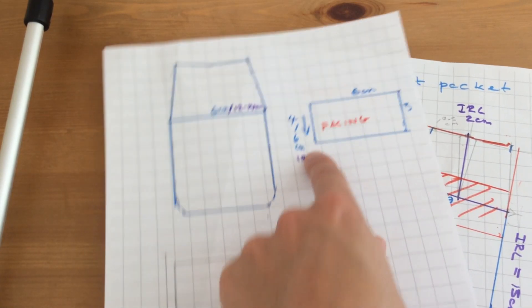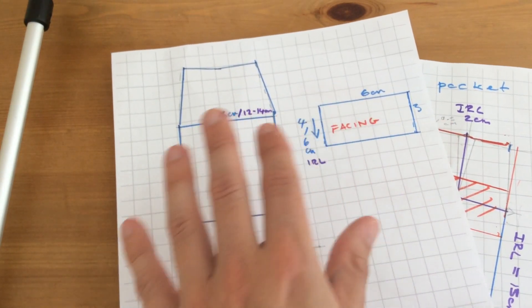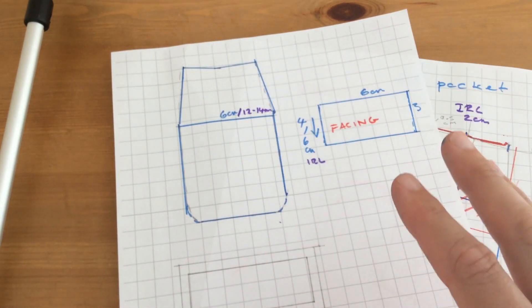And it's a bit like when we looked at the fly—some things are a centimeter, half a centimeter bigger than other pieces so that they're not all lying over the top of each other.